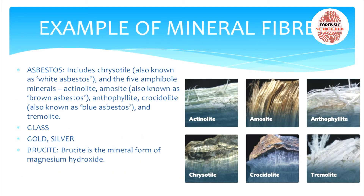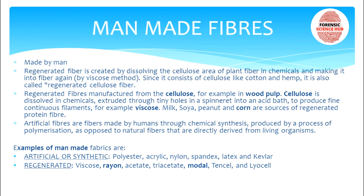Mineral fibers include asbestos, glass, gold, silver, and brucite. Asbestos has many types: chrysotile (white asbestos), amosite (brown asbestos), actinolite, anthophyllite, crocidolite (blue asbestos), and tremolite. Glass can also act as a mineral fiber. Gold and silver act as metal fibers. Brucite is the mineral form of magnesium hydroxide.